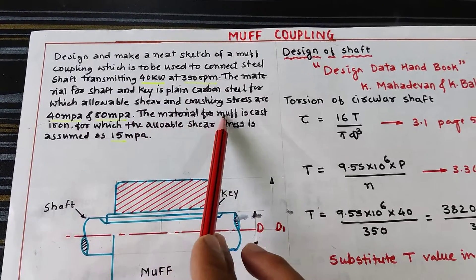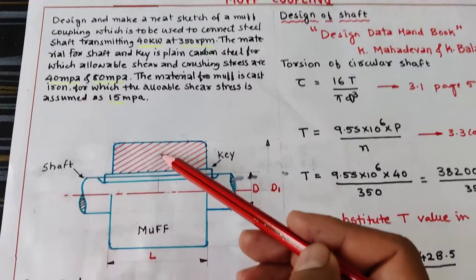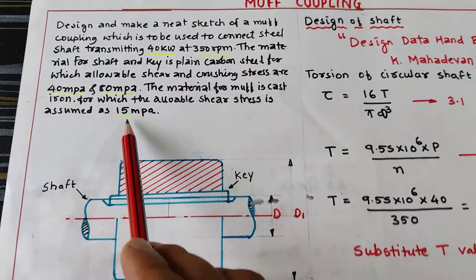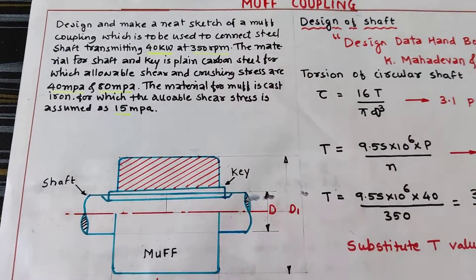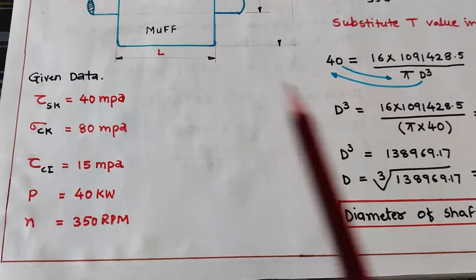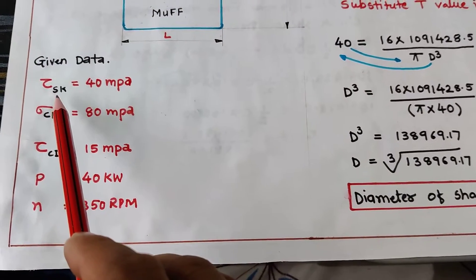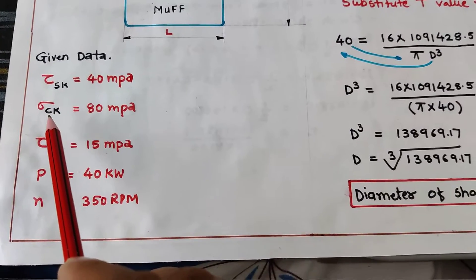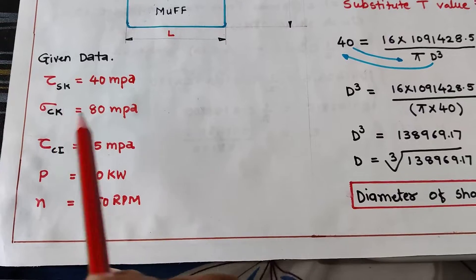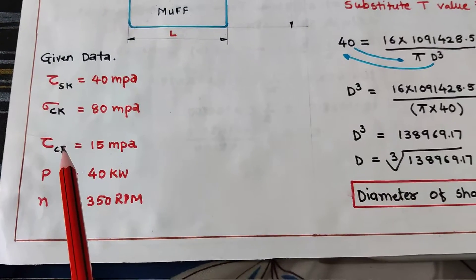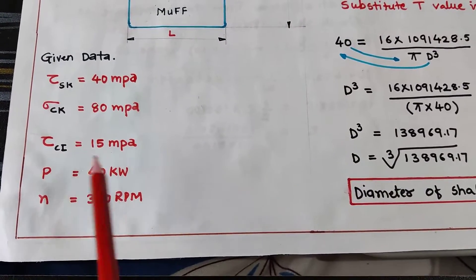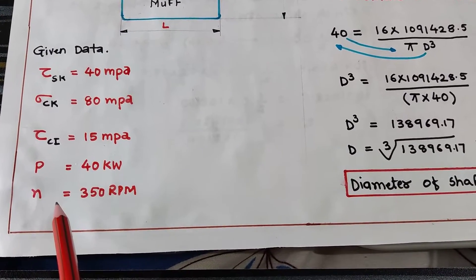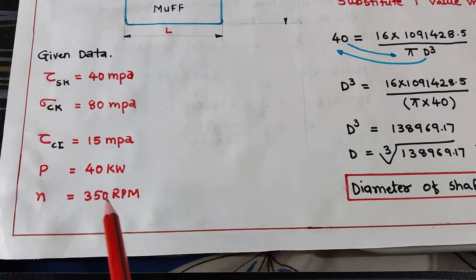The material for the MUF is cast iron, for which the allowable shear stress is assumed to be 15 MPa. Given data: shear stress for shaft and key material is 40 MPa, crushing stress for the key is 80 MPa, shear stress for cast iron is 15 MPa, power is 40 kW, and rpm is 350.